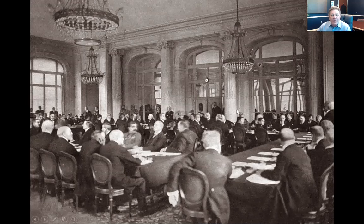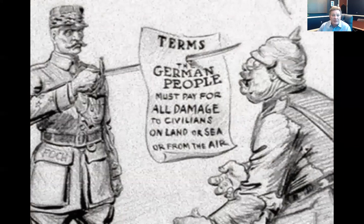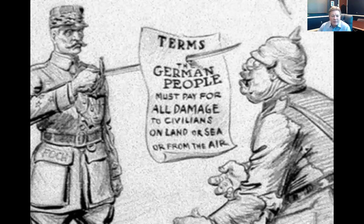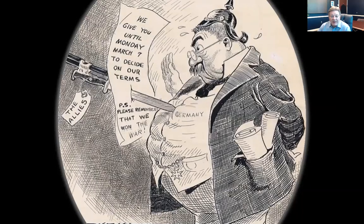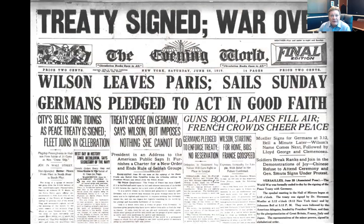The treaty was extremely punitive. Essentially the German people were held responsible for everything — all damage to civilians on land, sea, and air — and there was a clause requiring Germany to take full blame. It wasn't really a negotiated treaty; the Germans were given until Monday to agree to the terms, effectively forced to sign at bayonet-point.